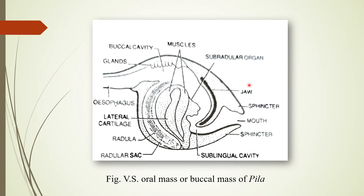The jaw consists of various smaller and 2-3 larger teeth, and works with the help of sphincter muscles. At the posterior part, an odontophoral mass is present, which consists of two sets of cartilage along with protractor and retractor muscles. The odontophoral mass forms a sub-radular organ at its anterior side. Beneath the sub-radular organ, a narrow space called the sub-lingual cavity is present. On the top of this odontophoral mass, the radula is present.